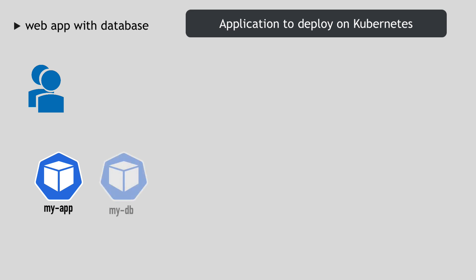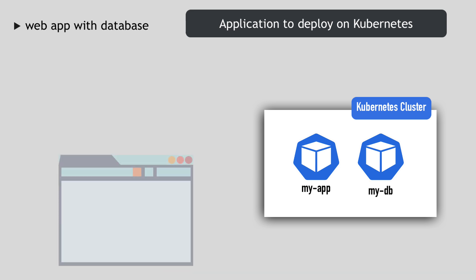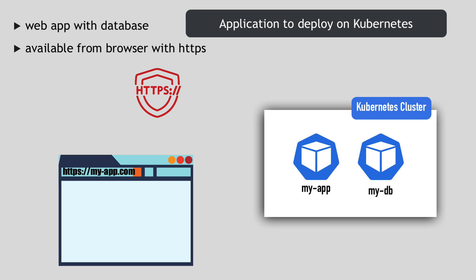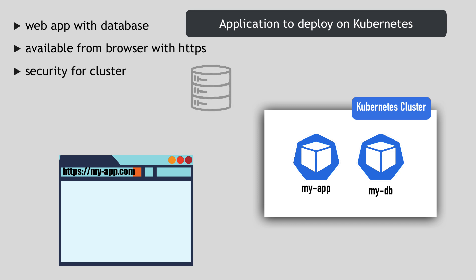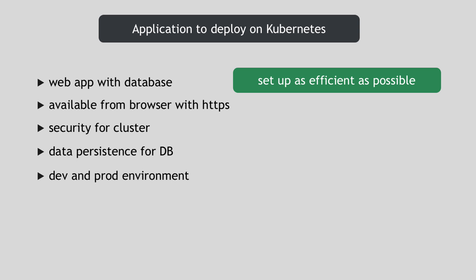Let's build a case where you and your team are developing a microservice application with a database that will be deployed in a Kubernetes cluster. You want your application to be available from a browser with your domain name and a secure HTTPS connection. You have requirements like security for your whole cluster setup and data persistence for your database, plus development and production environments that are the same so you can properly test new features before releasing them. You want to get this as efficiently as possible without spending a lot of time figuring out every piece of technology.